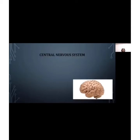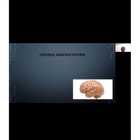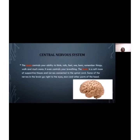The brain is responsible for the five senses we experience. The left side of the brain handles problem solving, math, and writing, while the right side handles creativity, arts, and music. The brain weighs about one and a half kilograms. It controls your ability to think, talk, hear, remember things, walk, and even breathing. The brain is a soft mass of supportive tissues and nerves connected to the spinal cord. Some nerves in the brain go directly to the eyes, ears, and other parts of the head. It serves as the control center of our entire body.